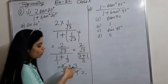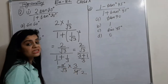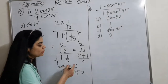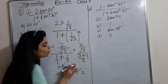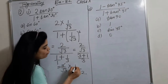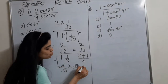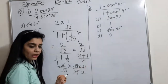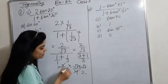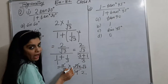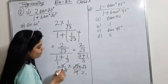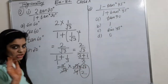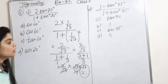Now how do we reduce root 3 and 3? The number 3 is actually root 3 into root 3, right? So root 3 cancels with root 3. What are we left with? Root 3 by 2. So this is my answer.